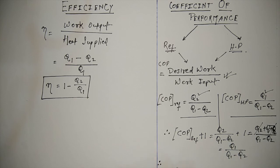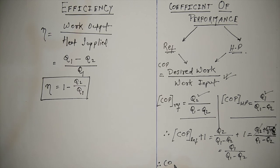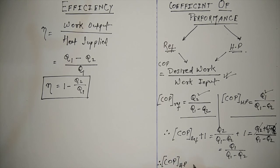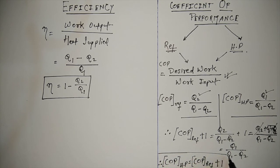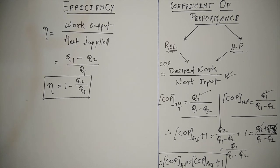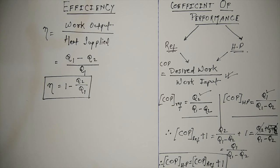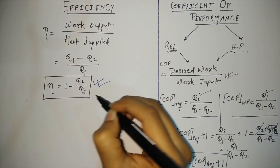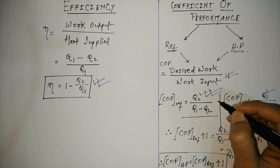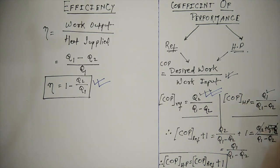Therefore, the coefficient of performance of the heat pump equals the coefficient of performance of the refrigerator plus one. This is an important conclusion from an examination point of view. In this video we have learned the efficiency formula for a heat engine and the coefficient of performance formulas for the refrigerator and heat pump, as well as the relation between them. In the next video we will continue further. Thank you.